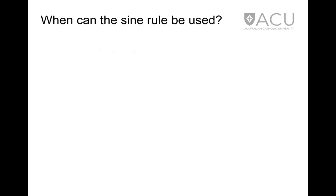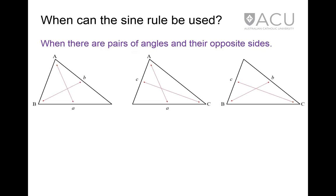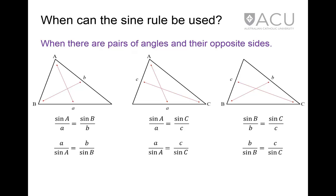The sine rule can be used when there are pairs of angles and their opposite sides, as in these examples. The ratio of the sine of each angle to the length of the opposite side is the same for all pairs of angles. This ratio can also be inverted to have the side lengths on the top line of each fraction.